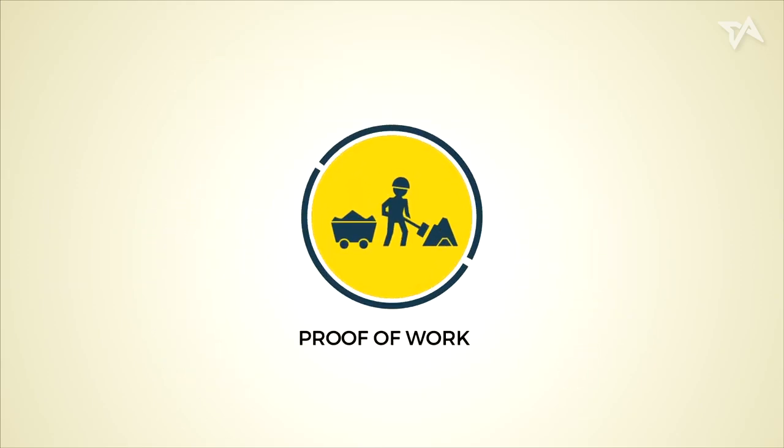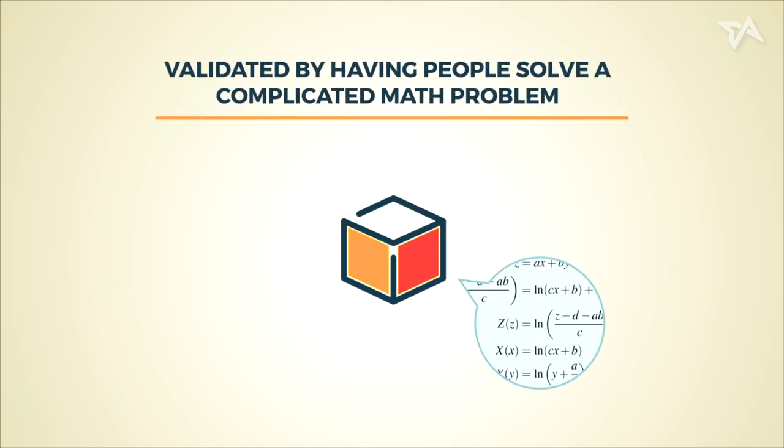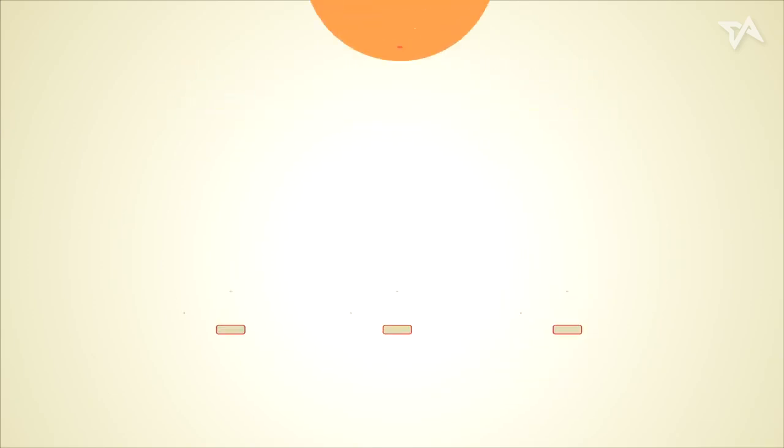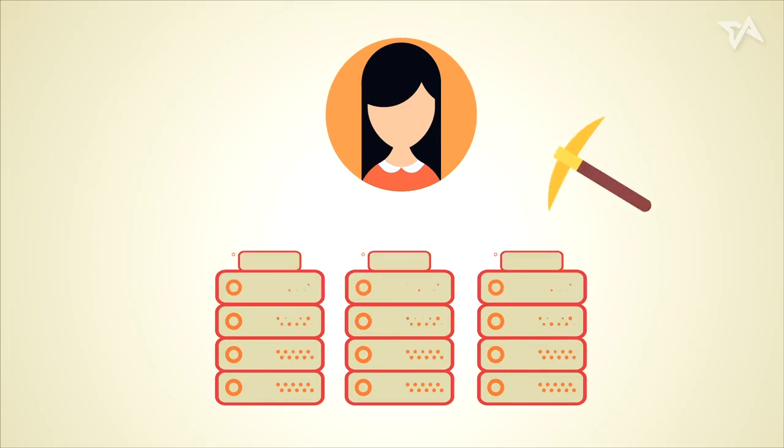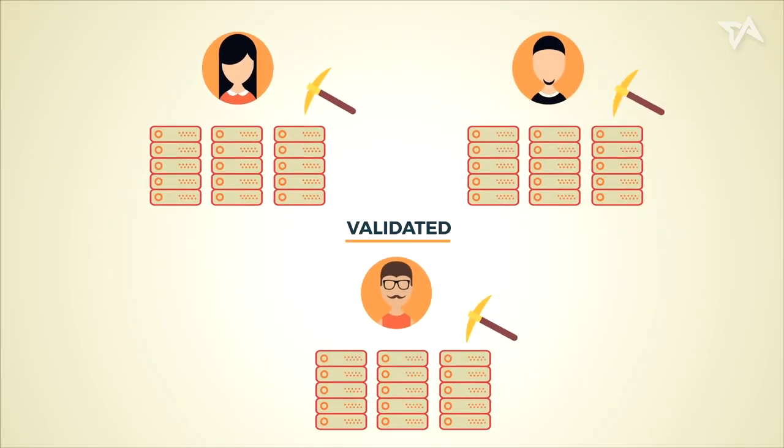First, let's take a look at proof-of-work. In a proof-of-work system, transaction data is stored in blocks, validated by having people solve a complicated math problem attached to it. This is typically done by powerful computers and is known as mining. A reward in the form of a cryptocurrency is issued to the first miner who cracks the problem.